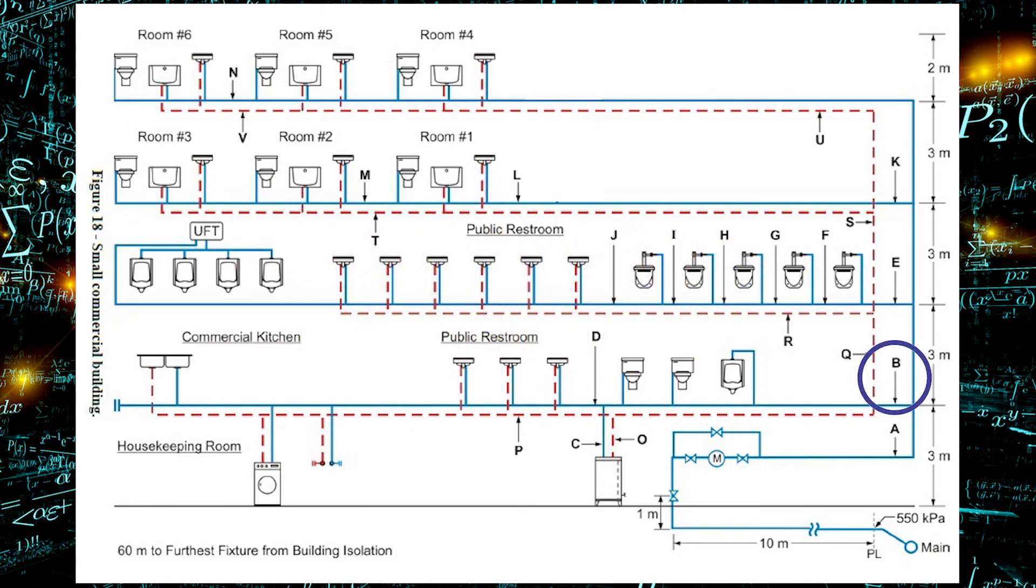But if we look at pipe B, it is now supplying that hot water tank and a bunch of other fixtures. So how do we size pipe B?